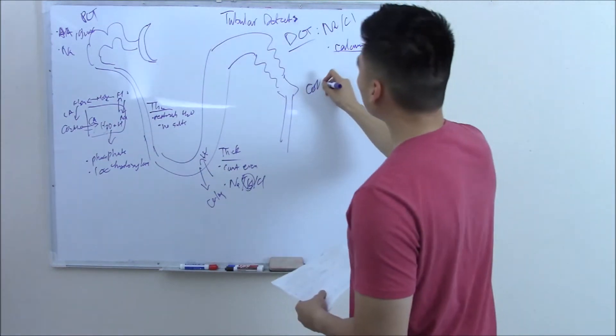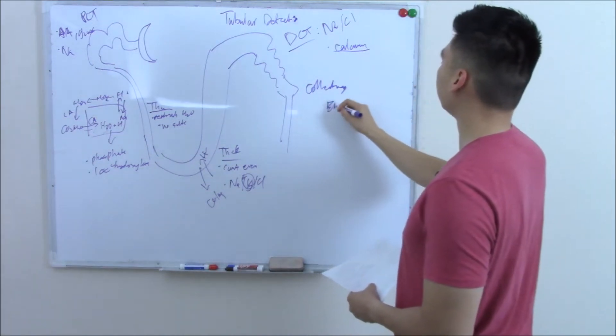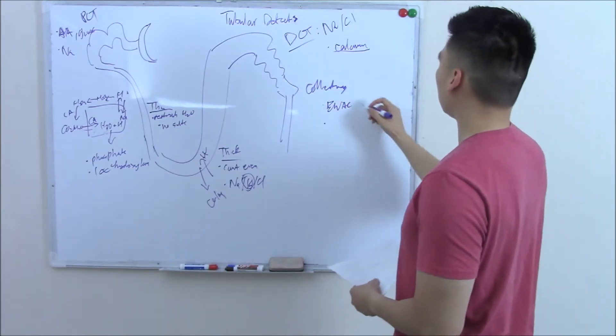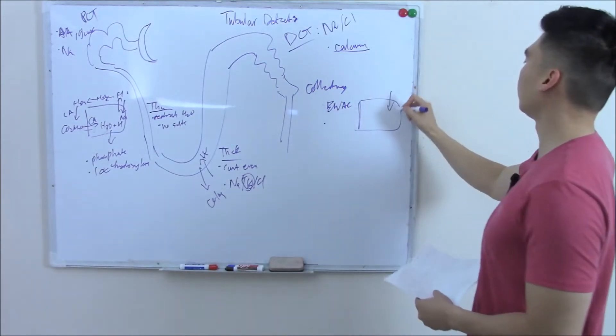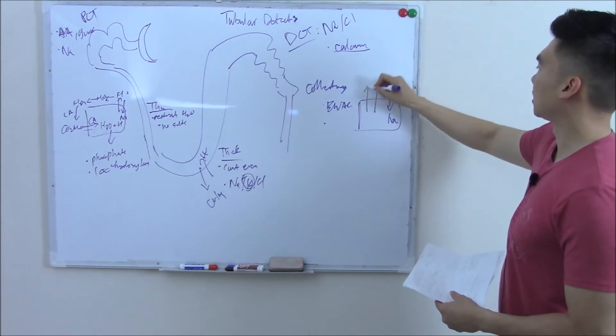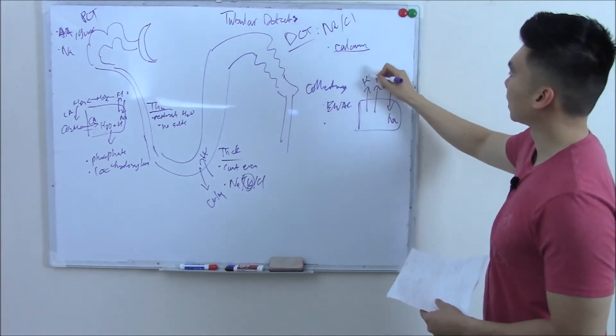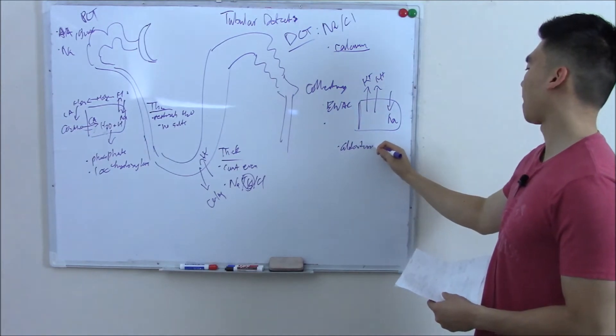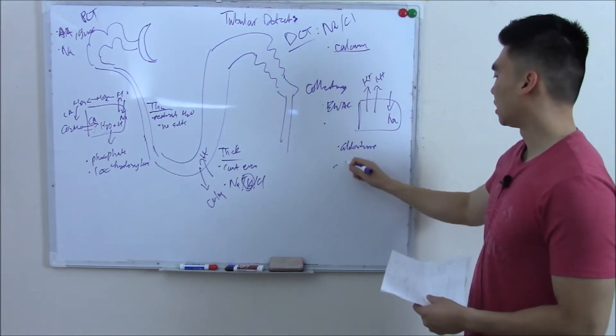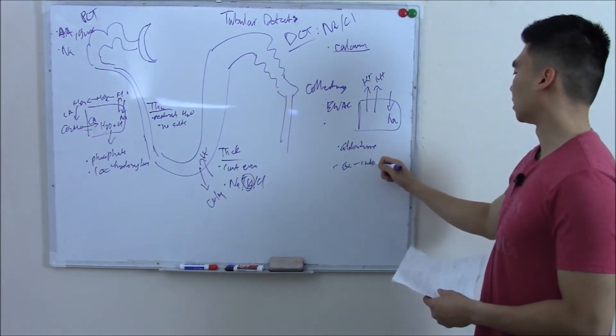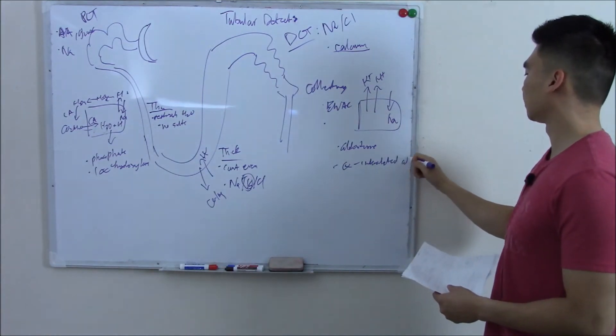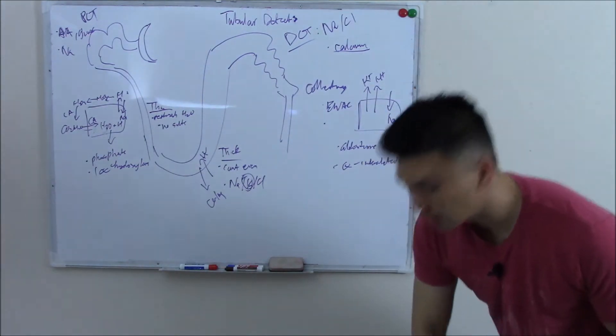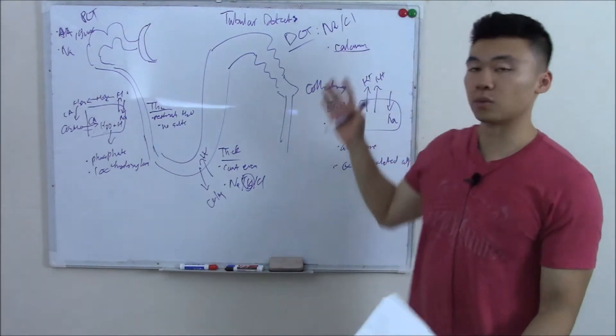And finally, your collecting duct. The main channel here is your ENaC channel, which takes in sodium at the expense of hydrogen and potassium. And we said aldosterone works here. Then we also said we had alpha intercalated cells. So that is your normal nephron.